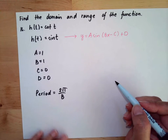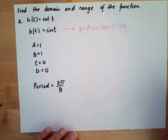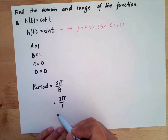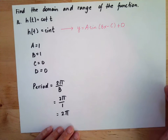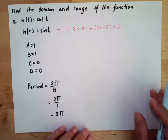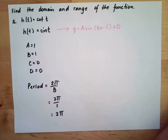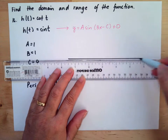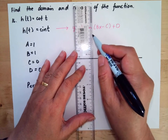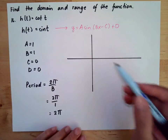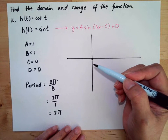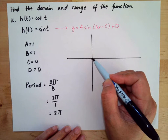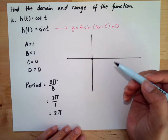We need to determine our period, which is 2π over b. This formula gives us the complete cycle of the function. So the period is 2π over 1, which means one complete cycle is 2π. To graph this, we divide our period into 4 parts. Since there's no shifting, the starting point for sine is always zero.